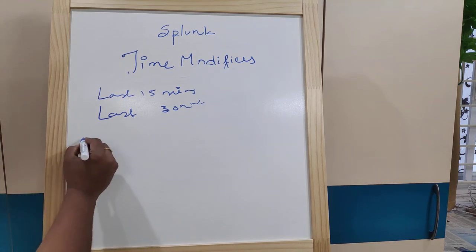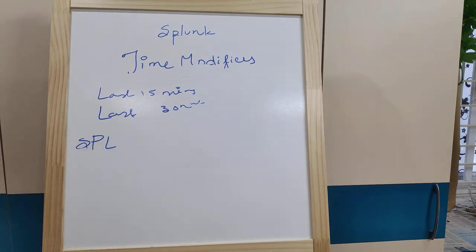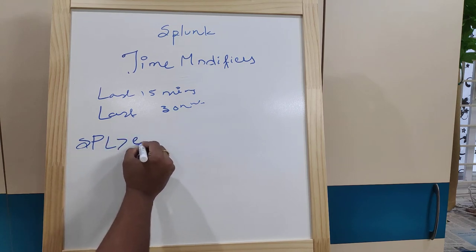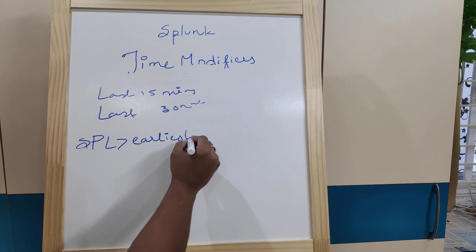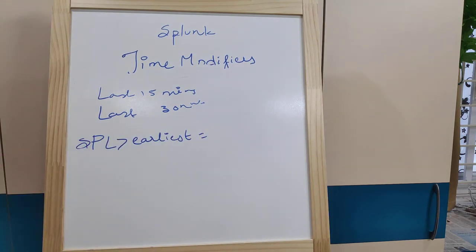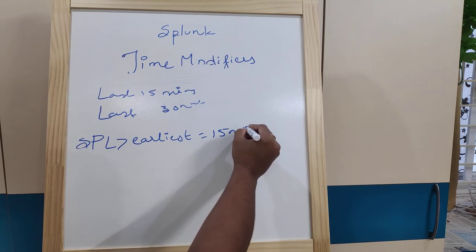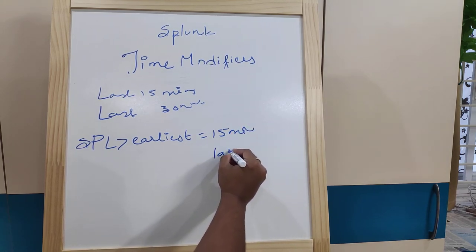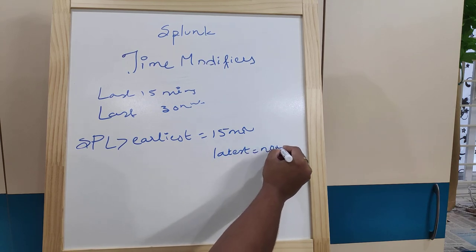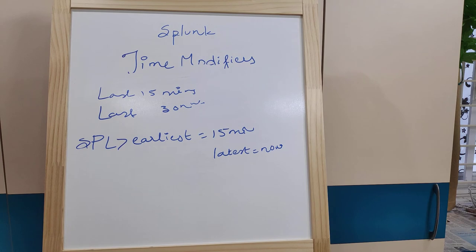SPL — Search Programming Language — lets you select the command query. You can select the last 5 minutes using the Splunk command. For example: earliest equal to -15m (15 minutes back), and latest equal to now. This fetches the last 15 minutes of data from now.